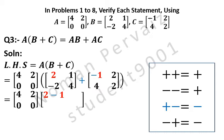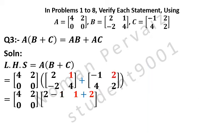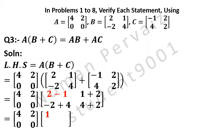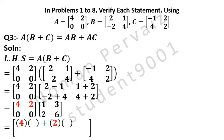1 is written from the second matrix. 1 comes from the first matrix, then plus, and 2 comes from the second matrix. Minus 2 comes from the first matrix, then plus, and 4 comes from the second matrix. 4 comes from the first matrix, then plus, and 2 comes from the second matrix. So B plus C gives: 2 minus 1 is 1; 1 plus 2 is 3; minus 2 plus 4 is 2; 4 plus 2 is 6.